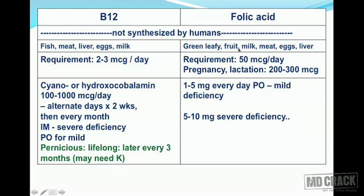Folic acid is present in green leafy vegetables, fruits, milk, meat, eggs, and liver. The daily requirement of B12 is 2 to 3 micrograms; folic acid requirement is 50 micrograms per day, going up to 200 to 300 micrograms during pregnancy and lactation.